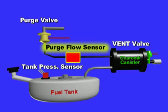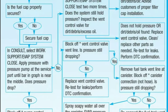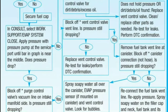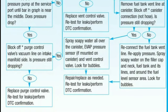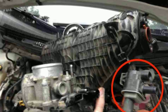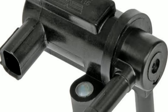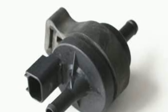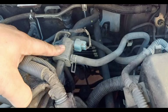If something is wrong with the EVAP system, it can set off a number of diagnostic trouble codes, or DTCs. Some of the most frequently triggered include: P0440 — evaporative emission control system malfunction; P0441 — incorrect purge flow; P0442 — small leak detected; P0455 — large leak detected; and P0456 — very small leak detected.